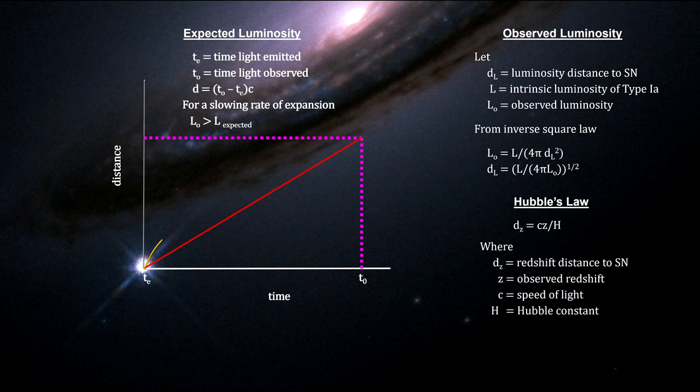But if the expansion is slowing down, the expansion rate in the past would have been greater than what we see now, which means it would have taken a shorter time to expand from its size at light emission time to its present distance compared to a non-accelerating universe. This would result in a shorter light traveled time, shorter distance traveled, and a brighter observed supernova compared to a non-accelerating universe.